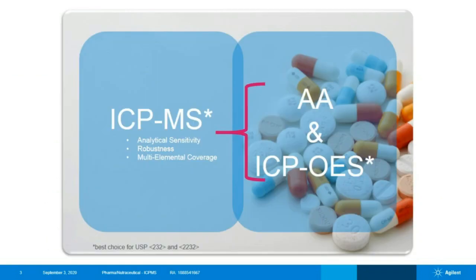Let's talk about how easy it is to use ICP-MS for elemental impurity testing. When considering atomic spectroscopy for elemental impurity testing in pharmaceuticals or nutraceutical samples, three techniques come to mind: atomic absorption (AA), ICP optical emission spectroscopy, or ICP mass spectrometry. While each of these techniques has a unique set of merits, ICP-MS is arguably the most versatile technique due to a superior combination of analytical sensitivity, robustness, and multi-elemental coverage. ICP-MS is the only atomic spectroscopy platform that can perform any application pertaining to elemental impurity testing following USP Chapter 232 and Chapter 2232, and might therefore be the best choice for your laboratory.